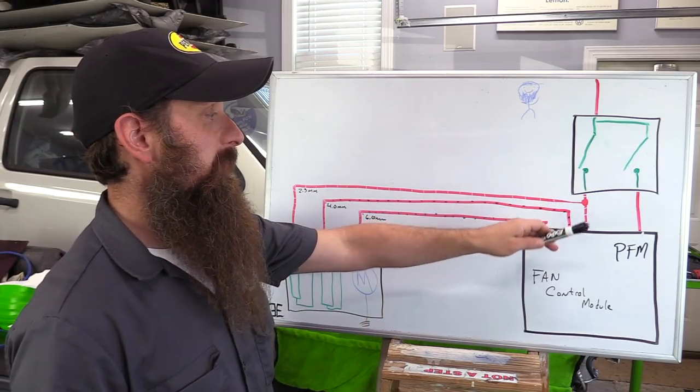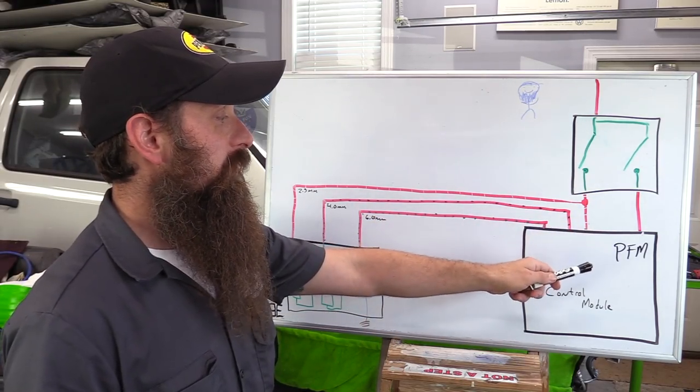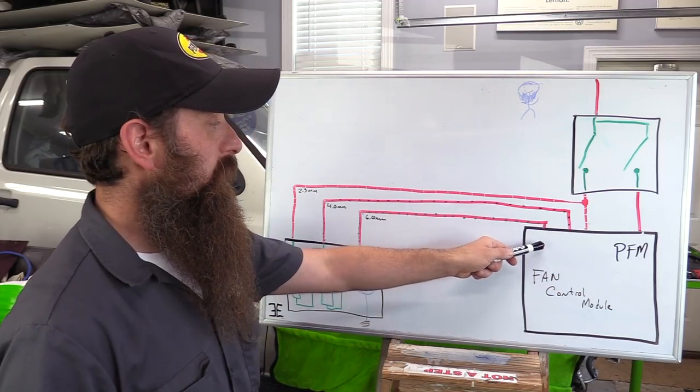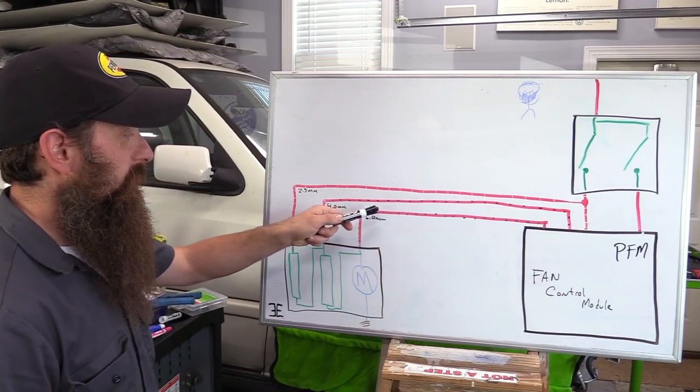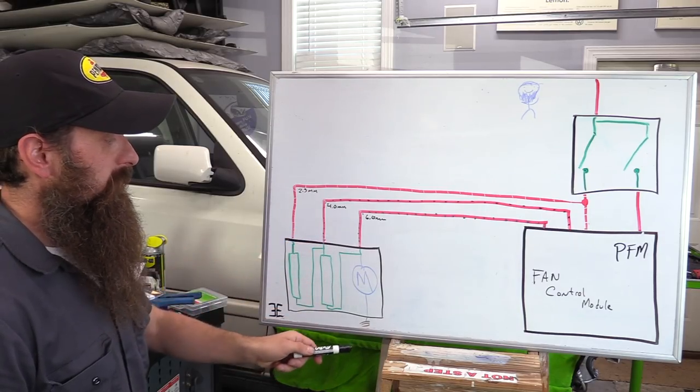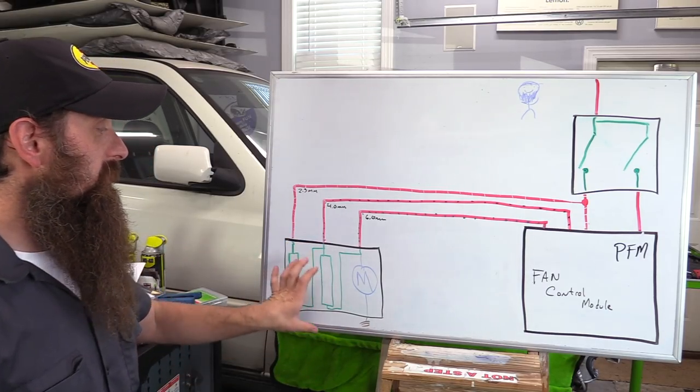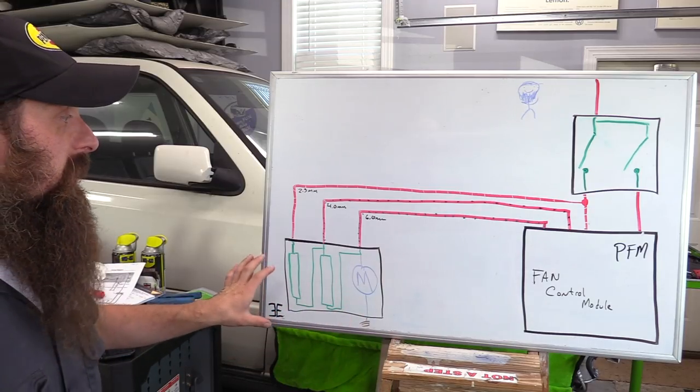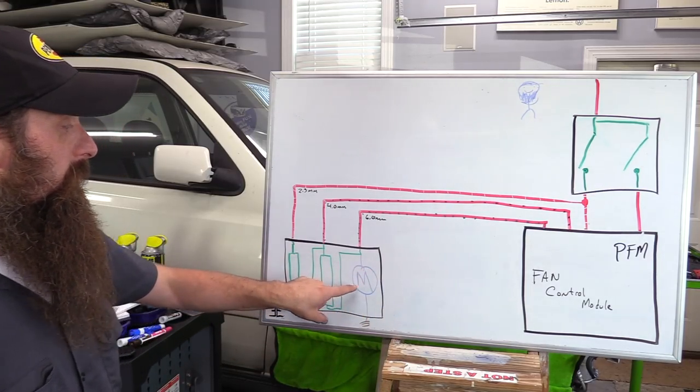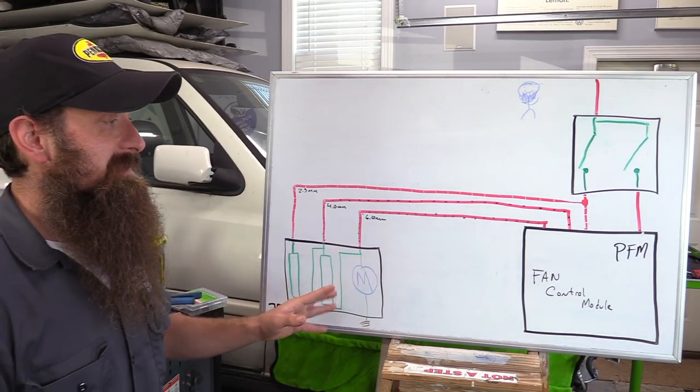For the high speed side thermal switch, it functions basically the same. The switch closes, sends signal to the fan control module. Fan control module then sends power out and it goes just directly to the motor and then of course to ground. So this is how our factory setup is able to have one fan, but three different speeds.